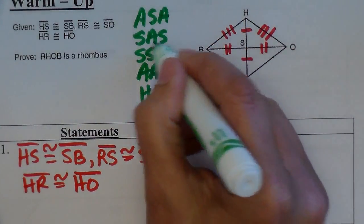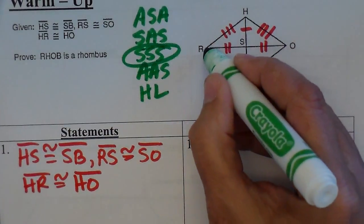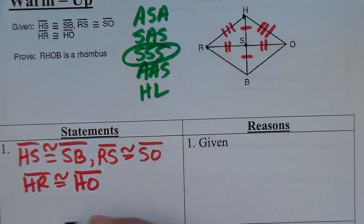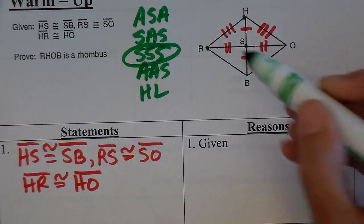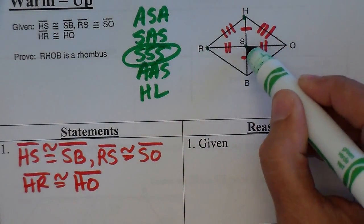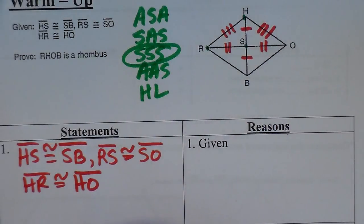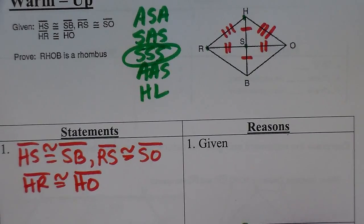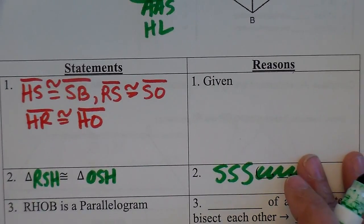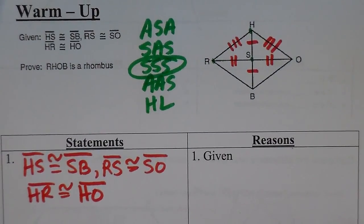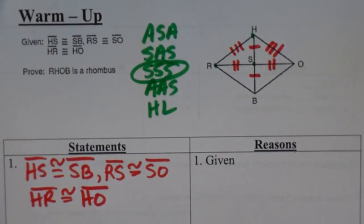This is a simple one: side, side, side. So I can say triangle RSH. Since I said RSH, I went from two marks to one mark, I have to call this one OSH — like Oshkosh. And that is by side, side, side. So that's how I know those two triangles are congruent.